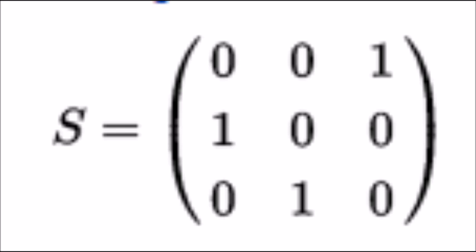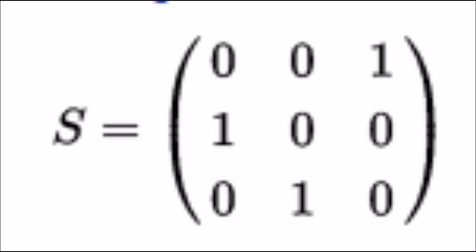For a four-port circulator, power entering in port 1 travels along the magnetized ferrite. The direction of the E field vector gets rotated by 45 degrees. Therefore power entered at port 1 appears at port 2. The power cannot be coupled to port 4 because ports 2 and port 4 are 90 degrees out of phase.